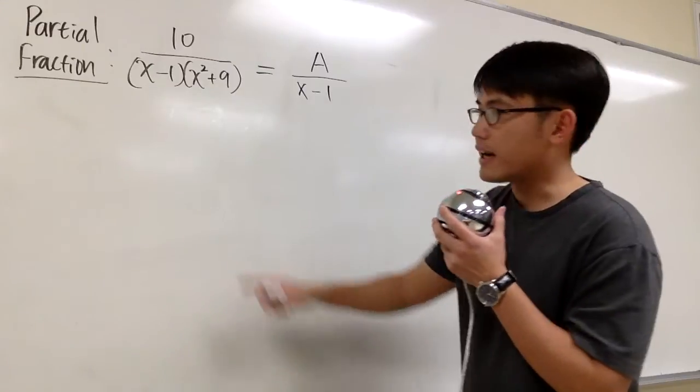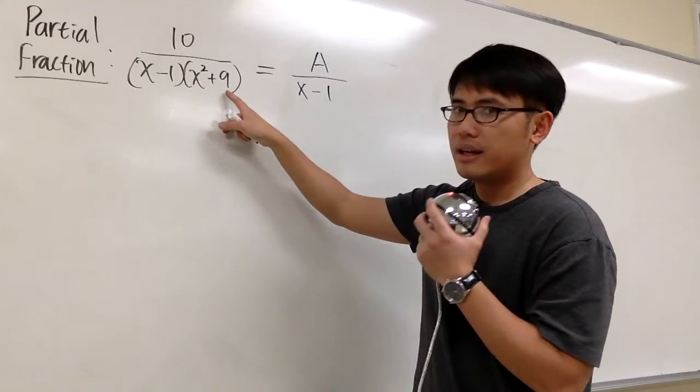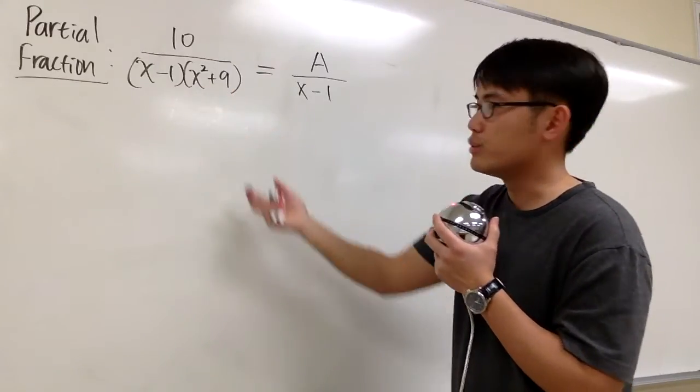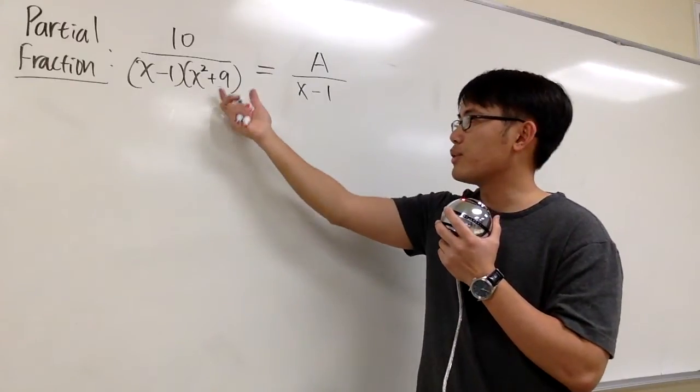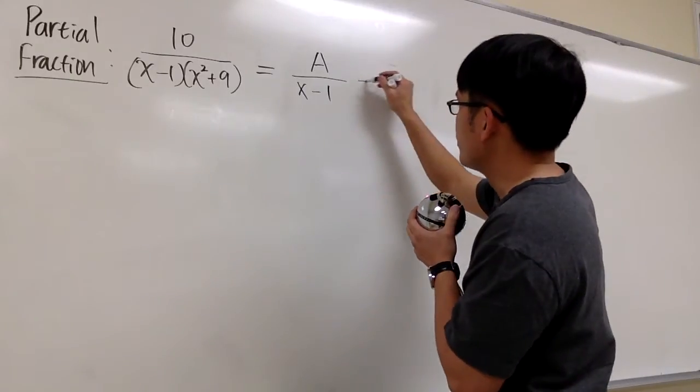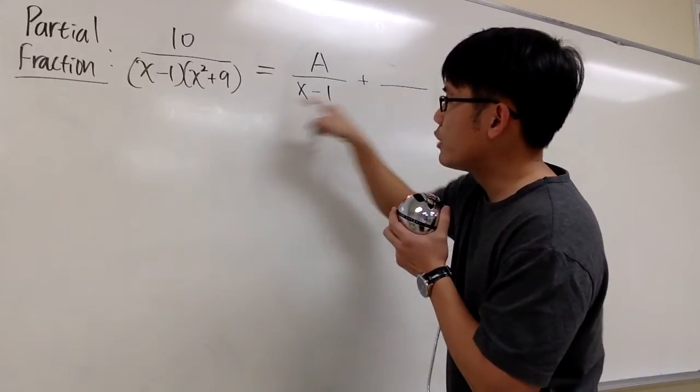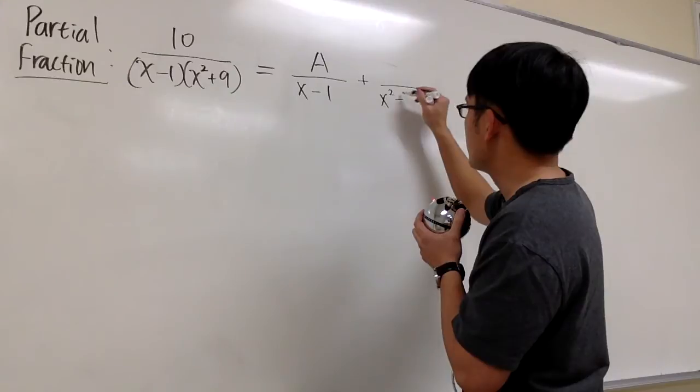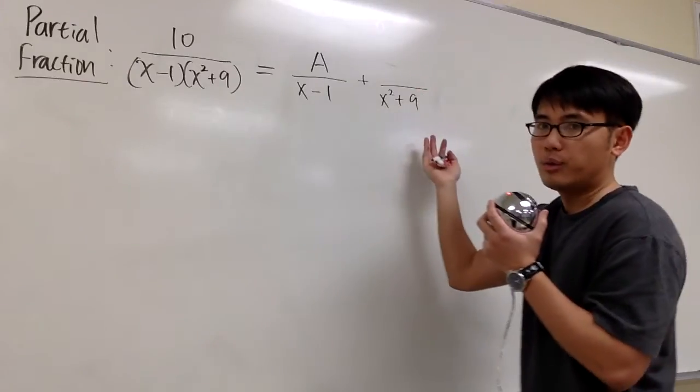And for the second factor, we have x² + 9. This is bad because we don't have a real solution for this quadratic expression. x² + 9, I have no solution for that. In such a situation, we are going to put down plus. The denominator will be just that, x² + 9. I can't factor it out anyways.